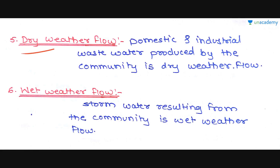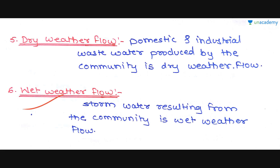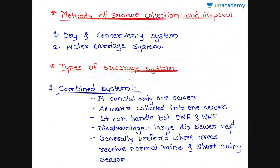Dry weather flow and wet weather flow are very important terms. Dry weather flow is the domestic and industrial wastewater produced by the community. Wet weather flow is storm water or rainwater resulting from the community — storm water resulting from rainfall is called wet weather flow.